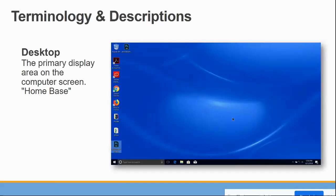Now let's switch gears from the physical pieces to what you see on the screen. Your desktop is essentially the primary display area on the computer screen — think of it as your home base. When you start your computer, the desktop is what you see first. It's usually where you have shortcuts to programs and maybe a background picture. All of the blue space in our screenshot is representative of your desktop, just like the surface of a real desk where you keep your things.